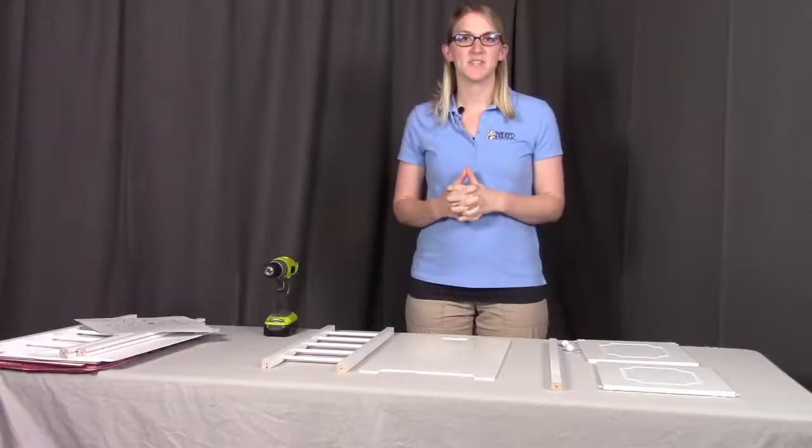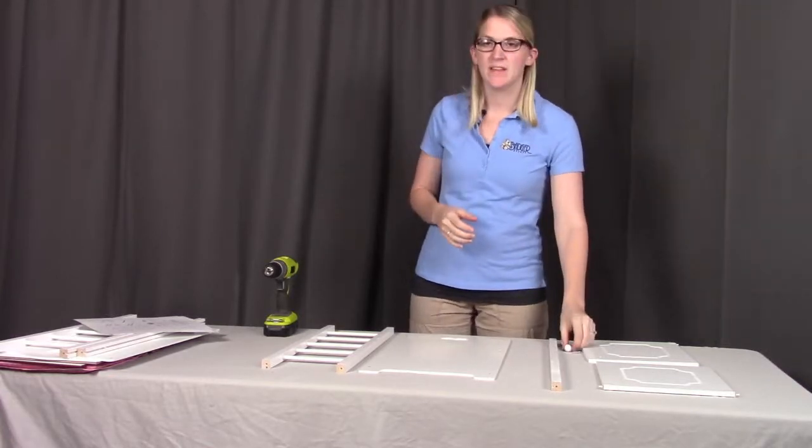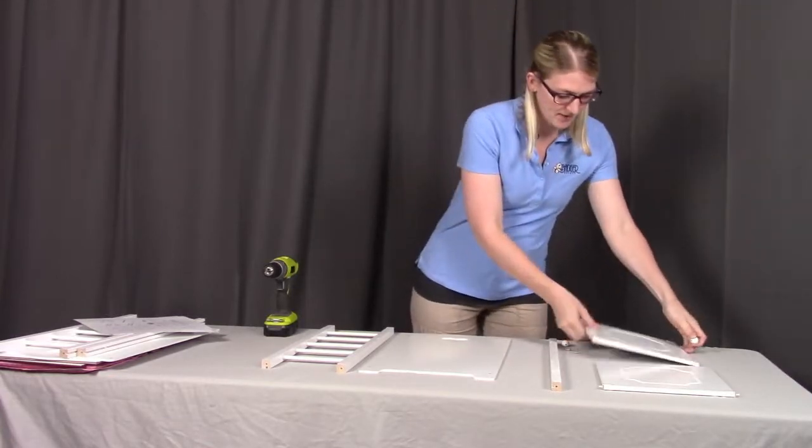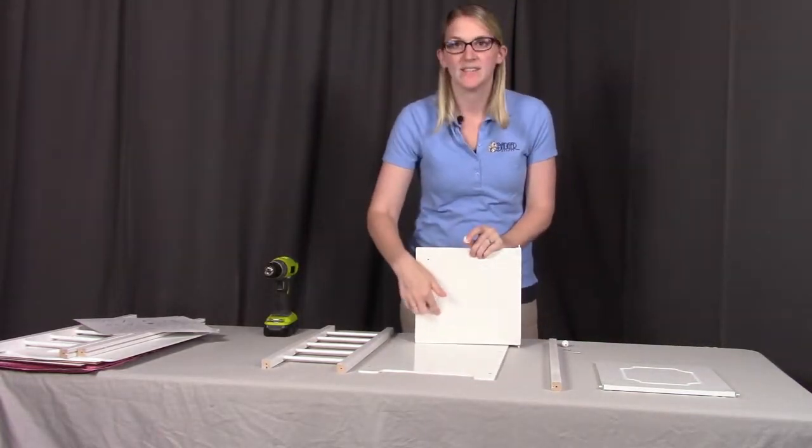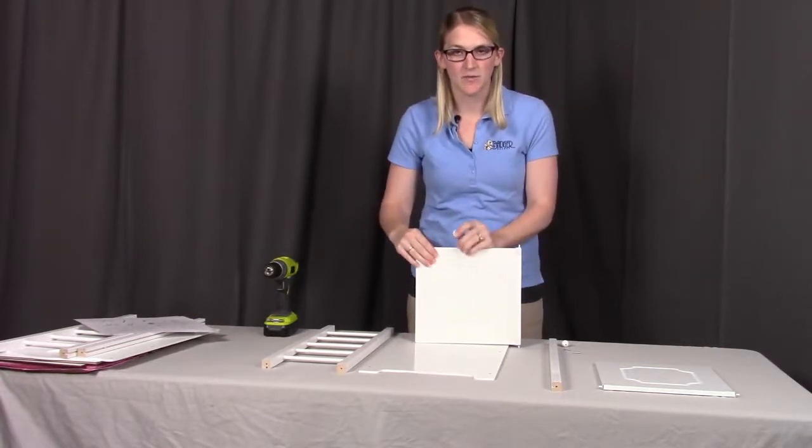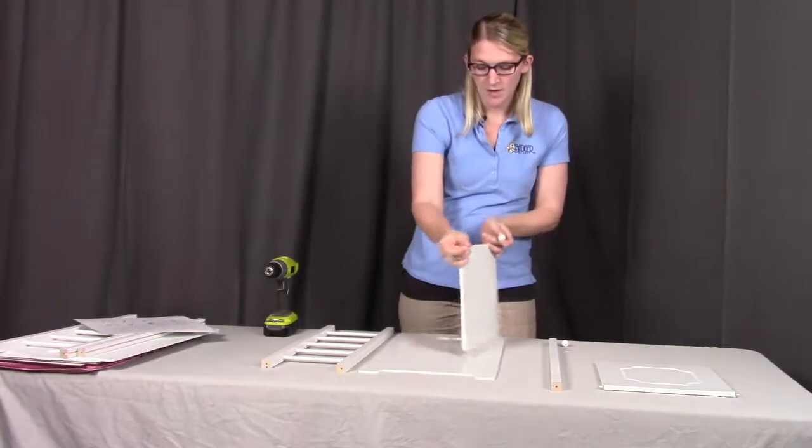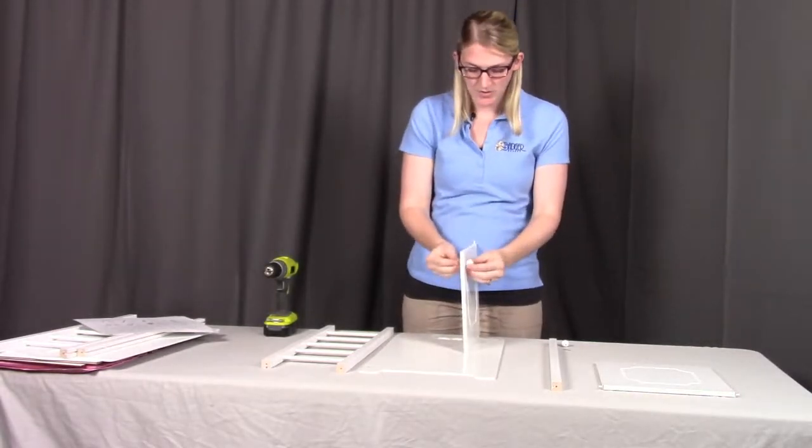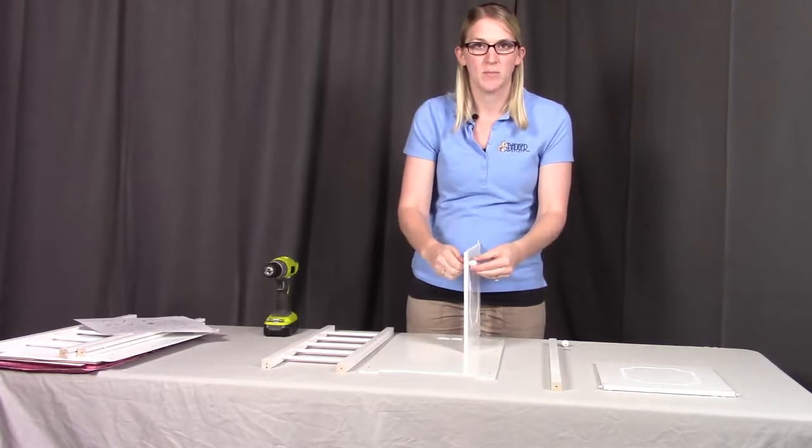So let's get started with step one. In step one, what we're going to first be doing is putting the handles on the doors. Now you want to put the round ball on the side that has the decorative groove. That's the outside of the door. You're going to take the smallest screws from the back side and screw those in. So let's get both of the door handles on both of the doors.